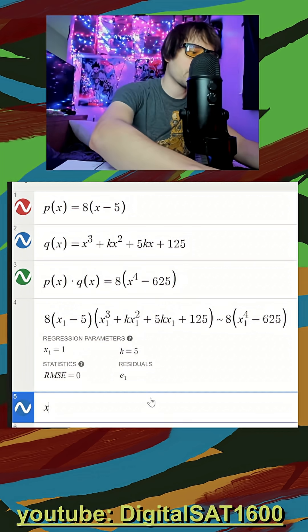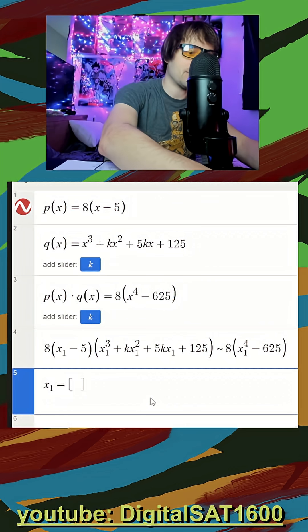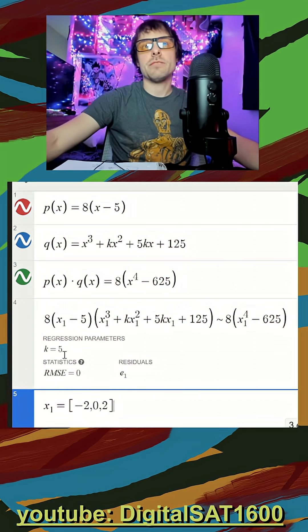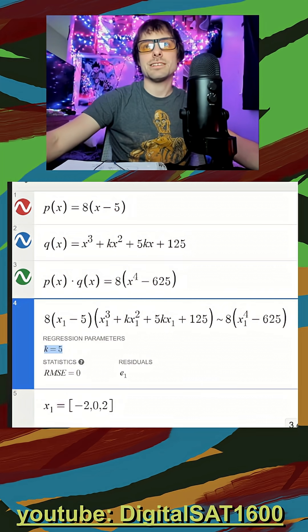Just in case sometimes it doesn't work, all you'd have to do is give a couple values here for our x, but you see we get the same value, k is 5. That's it for this one.